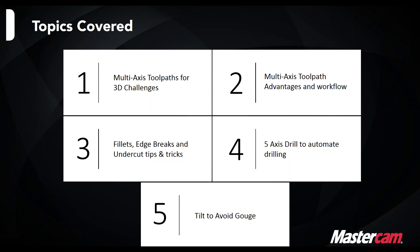Josh will also talk about how we can use the 5-axis drill command in Mastercam to automate different drilling routines, similar to feature-based drilling but smarter. At the end we'll talk about the tilt-to-avoid-gouge feature — where if you have a 3-axis part and don't have enough holder clearance, and you do have a 5-axis capable machine, it's possible in a lot of the 3D high-speed toolpaths.